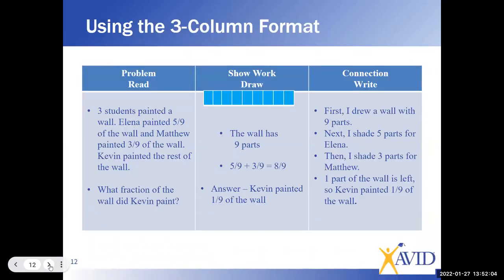So this is a three-column format. We would read the important information, extract the important information, figure out what they want us to solve for. We would draw a picture in the middle column. We would know that it has nine parts because the denominator is nine. We would know that Elena painted five-ninths and Matthew painted three-ninths. So together, Elena and Matthew painted eight-ninths. And how much is left over is the portion that Kevin painted. So Kevin painted one-ninth. And then the students could then list the steps that they used in order to solve this problem in that third column. So again, this is the student connection and the students' thoughts and how they solved the problem, even if we did the first two columns whole class.